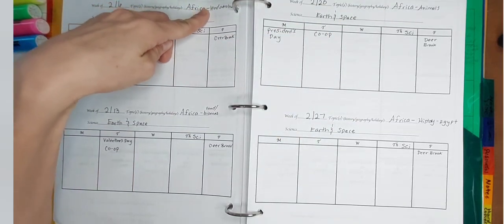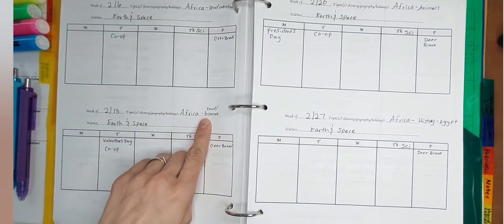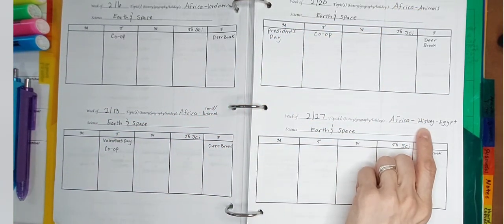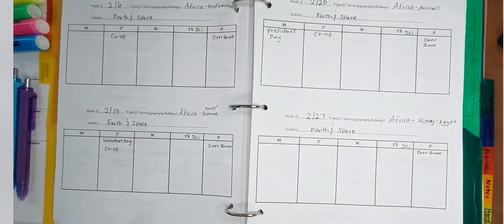The second week, land and biomes. The third week, animals. And the fourth week of the month, history, specifically ancient Egypt. Then I do the same thing for science, earth and space every week.